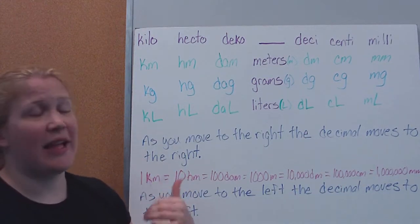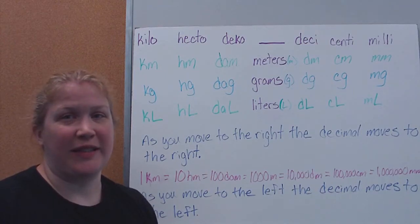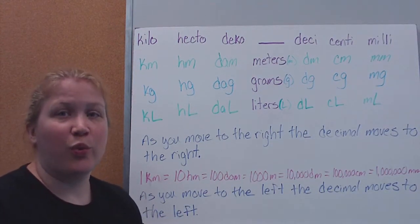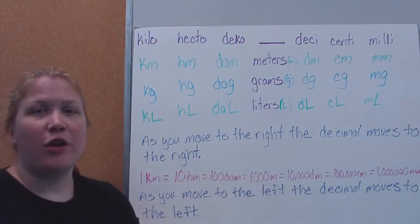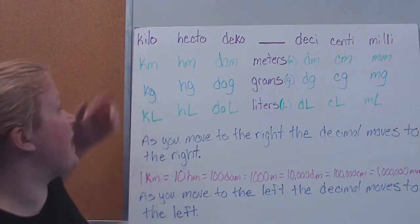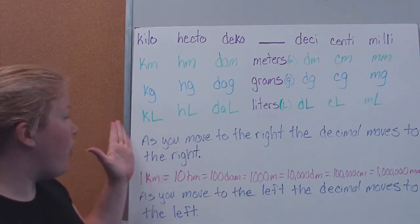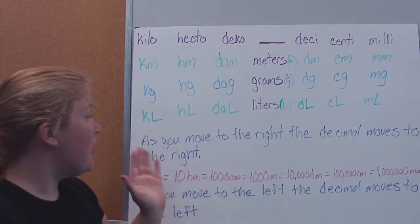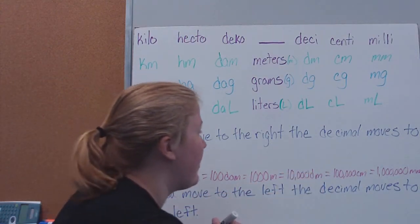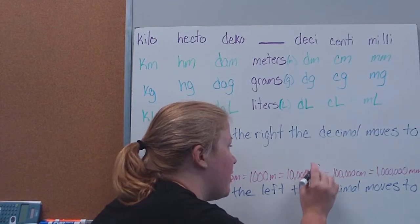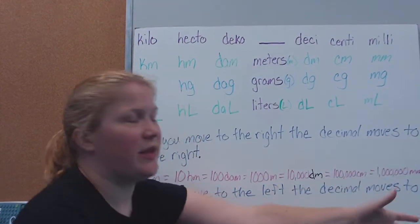You'll want to remember the order of these prefixes because it makes renaming much easier. As we move to the right on this chart, our decimal moves to the right. For example, one kilometer is the same as 10 hectometers, 100 decameters, 1,000 meters, 10,000 decimeters, 100,000 centimeters, or 1,000,000 millimeters.